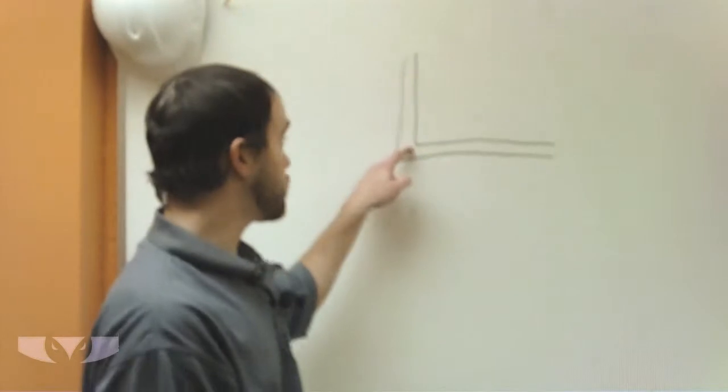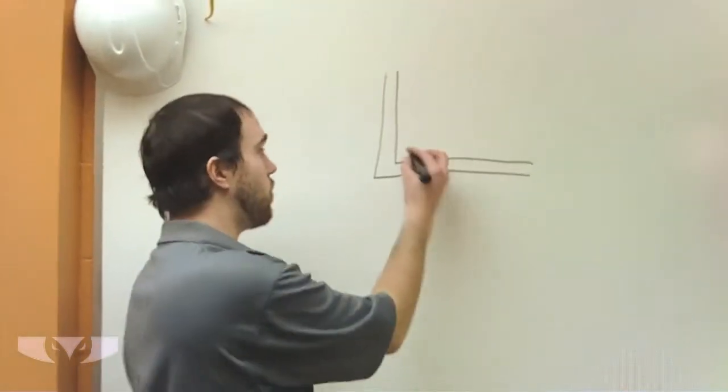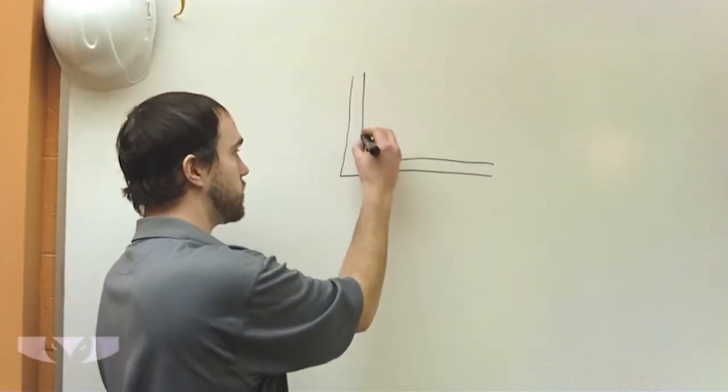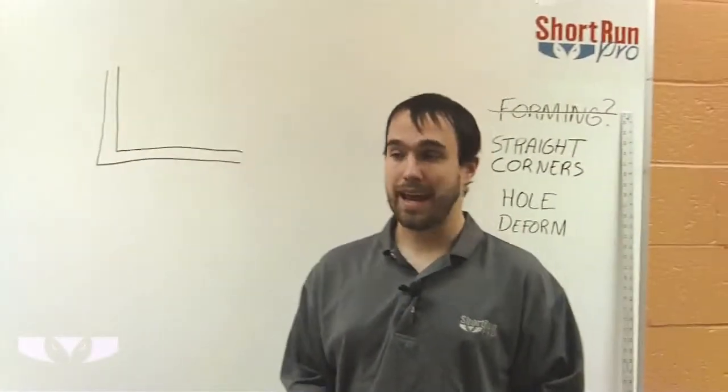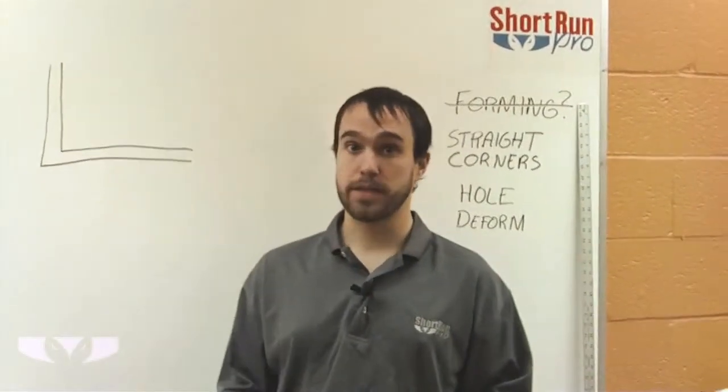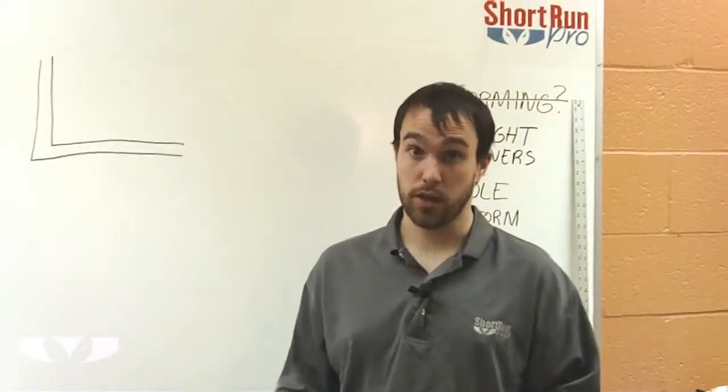The thing here is this square corner right here, there's no radius, it's just go down, bam, go over. Very difficult to perform in forming and most of the time for most materials, it's not possible at all.